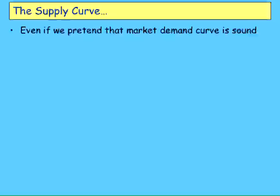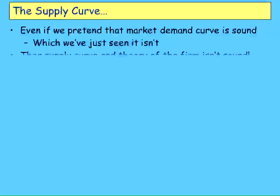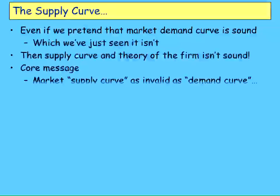Well, that's enough of the demand curve. The good news about the last half of the lecture is you can actually draw a demand curve starting from utility-maximizing individuals — it just looks rather wobbly. But let's now pretend the market demand curve actually looks the way neoclassicals want it to. It actually slopes downwards, even though we know that isn't the case. But even if it is, then the supply curve doesn't work the way they want it to. The core message here is that the market supply curve is just as invalid as the demand curve.